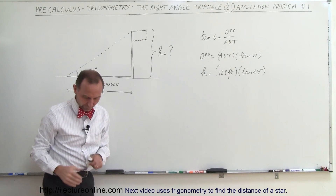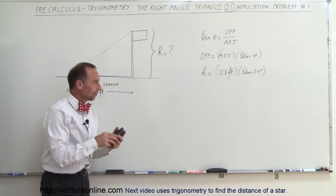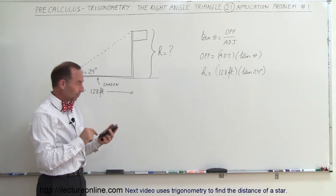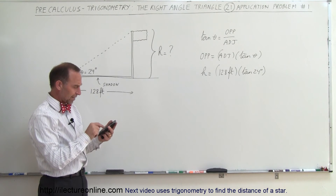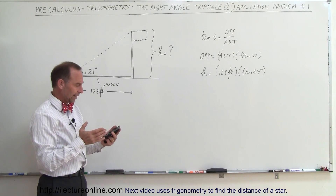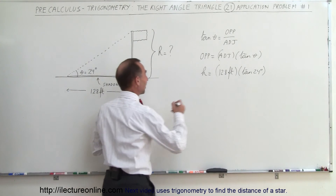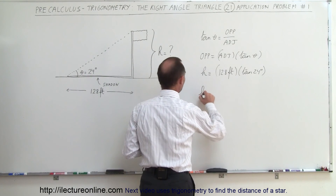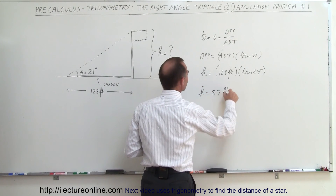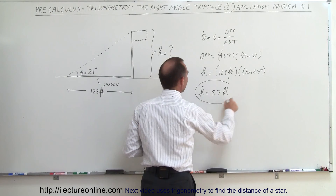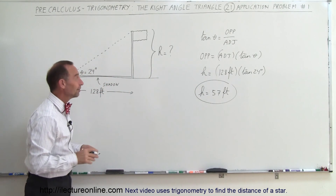And then of course you need a calculator. So 128 times the tangent of 24 degrees equals 57 feet. So that means the height of the flagpole equals 57 feet. And that's how we do that — you can see how powerful these functions are, and that's typically how they're used.